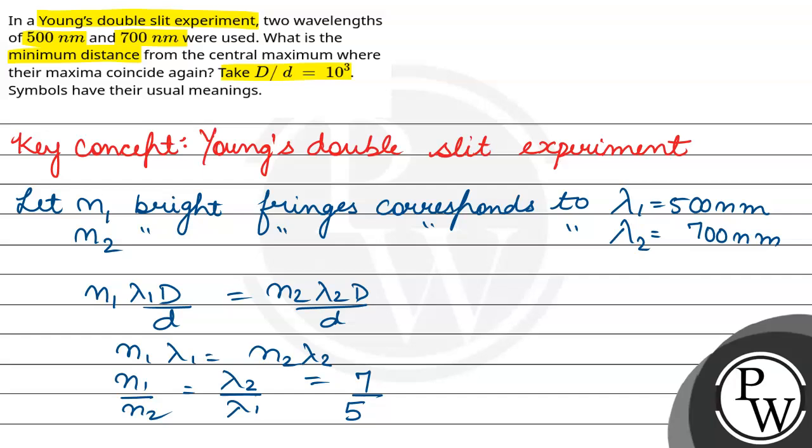Here we know that 7th maximum corresponds to 500 nanometer coincides with 5th maximum corresponding to 700 nanometer. This will be 14th by 10th maximum of lambda 1.